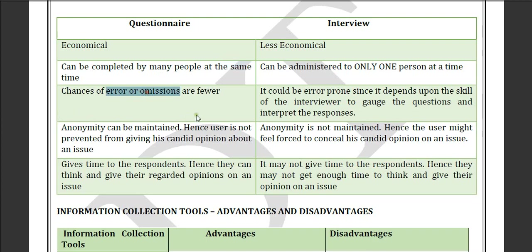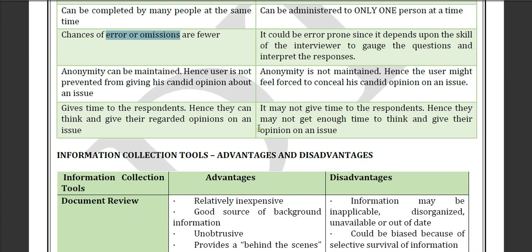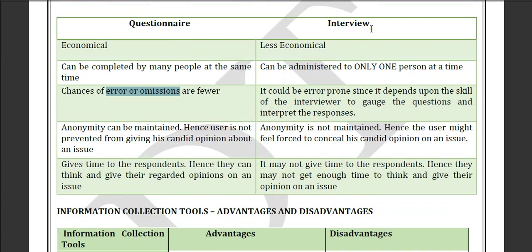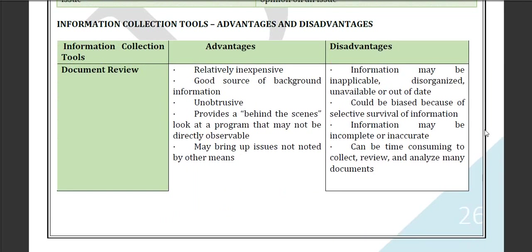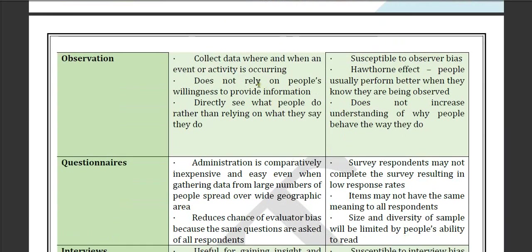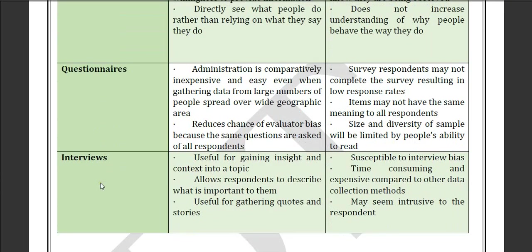There is also a higher chance of error in questionnaires because not everyone will answer correctly, whereas in an interview the interviewer can ensure correct responses. Those are the basic differences between questionnaires and interviews, which is a very important exam question. The information collection tools section also covers advantages and disadvantages — including document review, observation, and the questionnaire and interview sections.